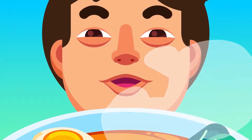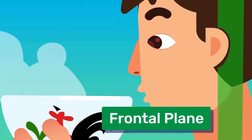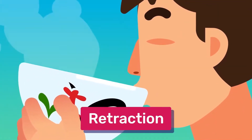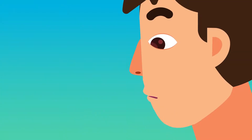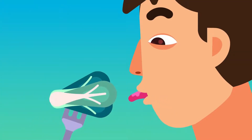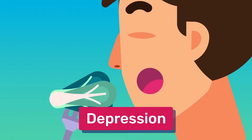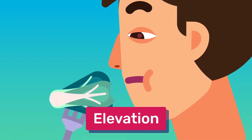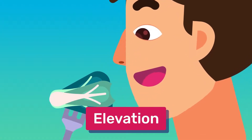A movement which causes a body part to move further anteriorly from the frontal plane is called protrusion. When retraction occurs, the body part moves posteriorly, closer to the frontal plane. Examples include our mandible, lips, and tongue. The mandible is also capable of depression — moving inferiorly — and elevation — moving superiorly — such as when we bite into some tasty vegetables.